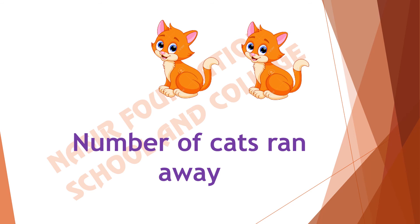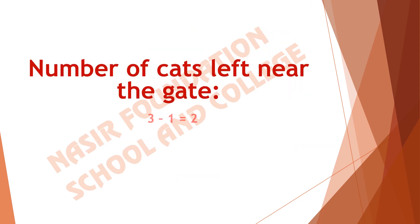How many cats are left near the gate? One, two. Out of these three cats, if we subtract one cat that ran away, we are left with two cats near the gate. So the number of cats left near the gate are two.